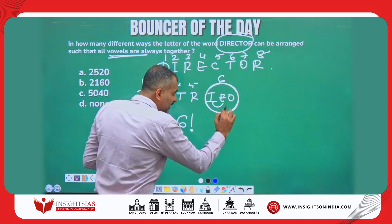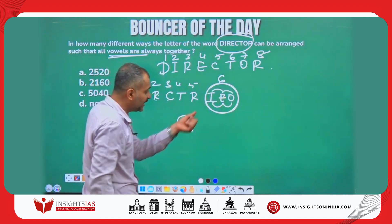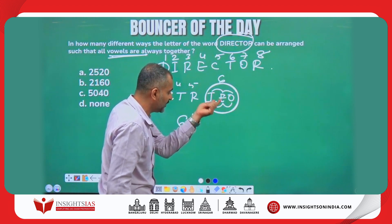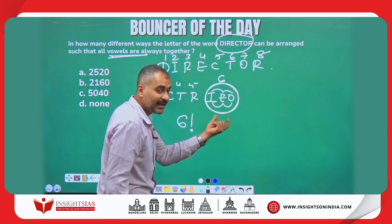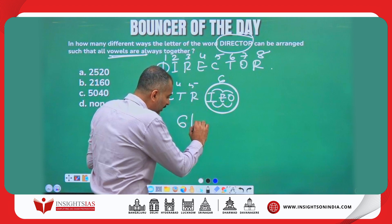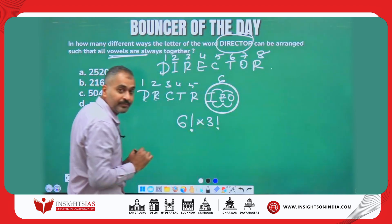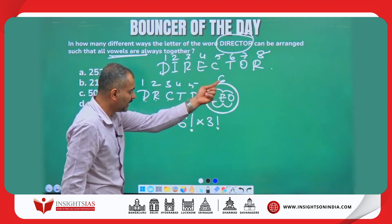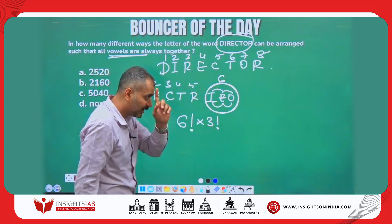But they can internally change in different ways, right? I can go here, O can come here, E can come here in different ways. When three characters which are all different are arranged among themselves, that is 3 factorial ways.